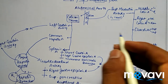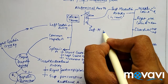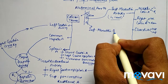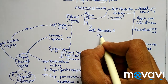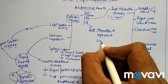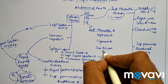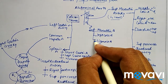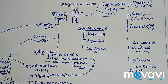Now coming to the third branch — the inferior mesenteric artery. The branches of the inferior mesenteric artery are: the first branch is the left colic artery, the second is the sigmoid artery, and the third is the superior rectal artery. These are the three branches of the inferior mesenteric artery.